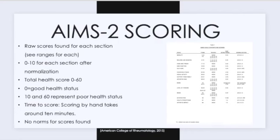Scoring for the AIMS-2 is a little bit more complicated than the others. Responses are mixed around so that the numbers used to score the answers don't always indicate poor health status. When scoring, it's important to make sure each item is scored correctly, taking into account which questions have a reversed scale. Once the raw score is found by adding up each response, the scores of each item are added together. The range of scores will depend on the number of items in the scale, as shown in table one on the slide.